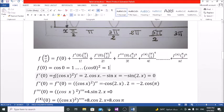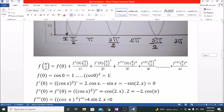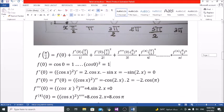f dash of 0 equals twice cosine x times the differential of cosine x, which is minus sine x. This makes minus twice sine x cosine x, which is equal to minus 2x. That is minus pi, sine pi equals 0, of course, sine 180.